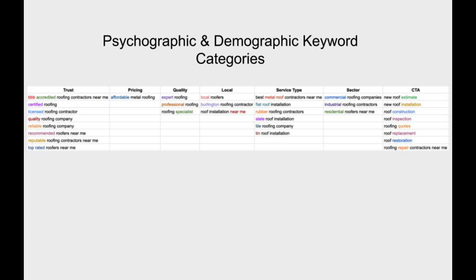Some people are going to care about pricing — maybe all of them. Affordability is something you want to mention, maybe not the precise pricing, but pricing options and packages, and allude to that. Quality — people care about expert services, professional specialists. They want someone who really knows what they're doing. So if you can say something like 'trusted for 30 plus years in this area' or 'expert roofing contractor' or even 'labeled as the number one expert roofing contractor in Time Magazine,' that would help build both quality and trust.